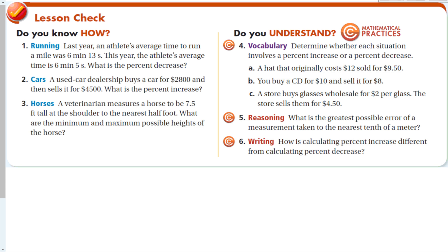Quick lesson check: Last year, an athlete's average mile time was 6 minutes 13 seconds; this year it's 6 minutes 5 seconds. What is the percent decrease? The difference is 8 seconds. We must convert 6 minutes 13 seconds to just seconds, which equals 373 seconds. So 8 divided by 373 gives about 0.02, or a 2 percent decrease.